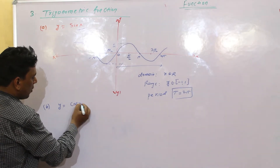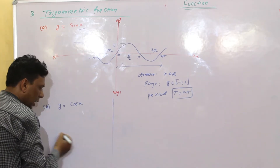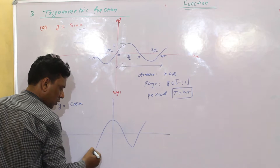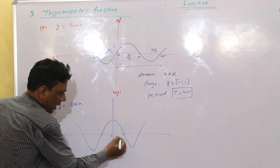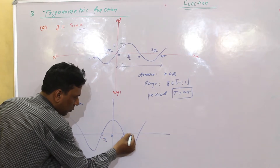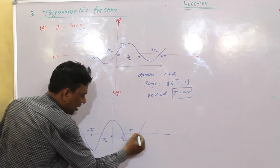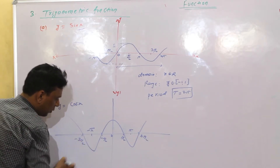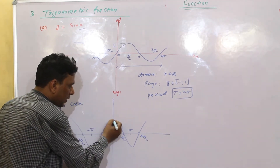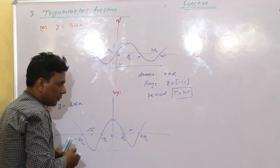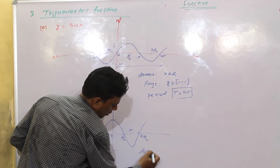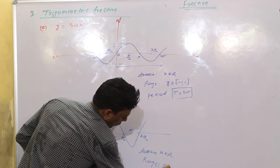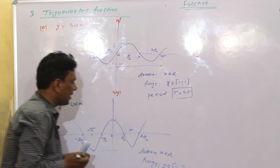Second part: y = cos x. इसका graph कुछ इस तरीके से है - यहाँ पर 0, π/2, −π/2, π, −π, 3π/2, −3π/2. Maximum यहाँ पर 1 है और minimum −1 है। इनका जो domain है: x belong to R. Range में y belong to [−1, 1] - यह cos x का basic graph है।